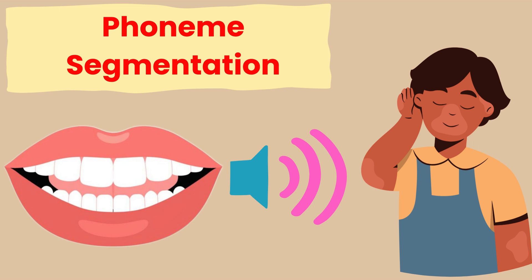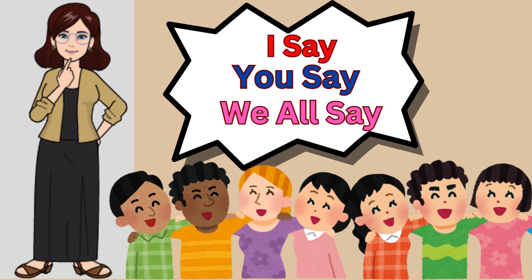Phoneme segmentation. I will say a word. You will repeat the word back to me. Then we will say the word together. Then we will segment the sounds. Example: I say set. You say set. We say set. What are the sounds? Set. I say kick. You say. We say kick. What are the sounds? K, ik, k.